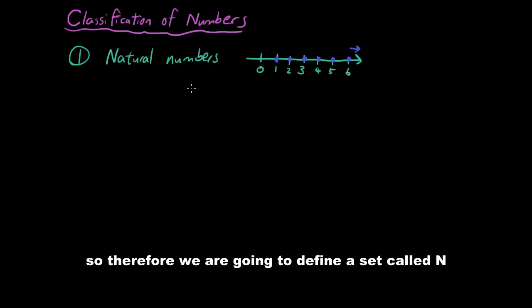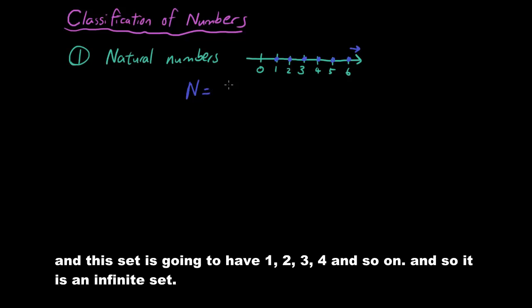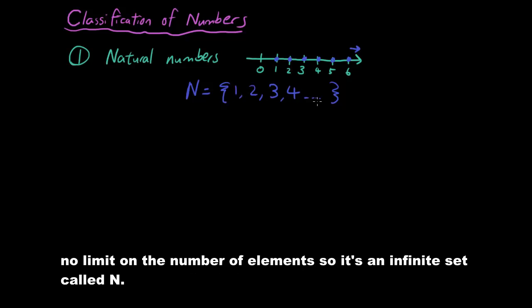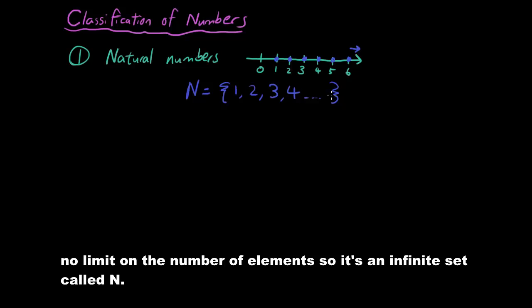Natural numbers do not include 0. Therefore we are going to define a set called N, and this set is going to have 1, 2, 3, 4 and so on. So it is an infinite set. We have no limit on the number of elements, so it's an infinite set called N, natural numbers.